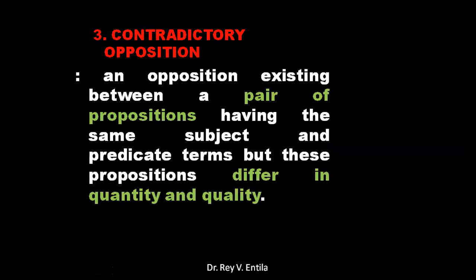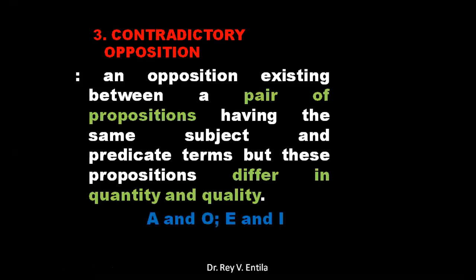Contradiction — like an X pattern. Contradictory opposition: an opposition existing between a pair of propositions having the same subject and predicate terms, but differing in both quantity and quality. Quantity: universal versus particular; quality: affirmative versus negative.